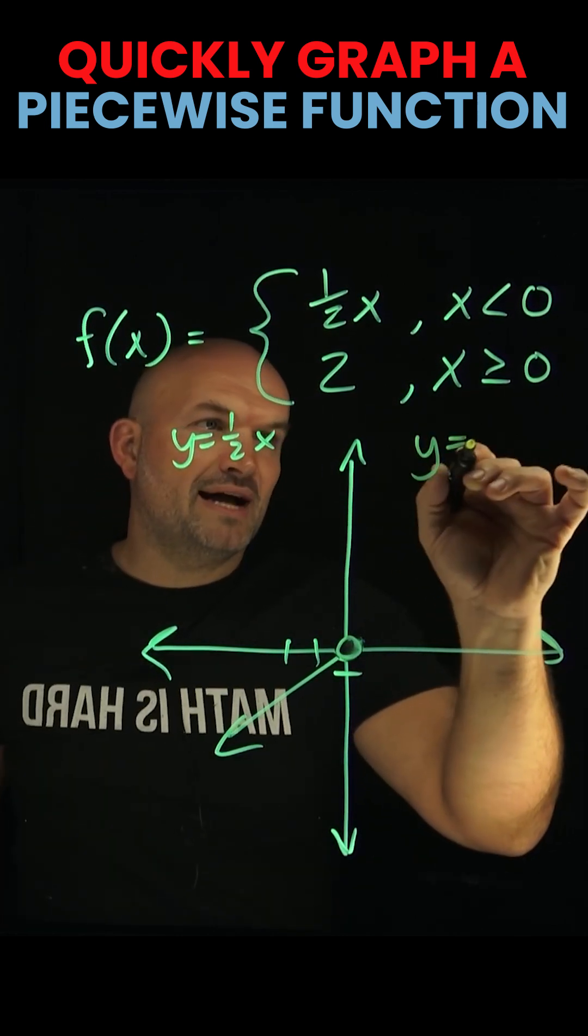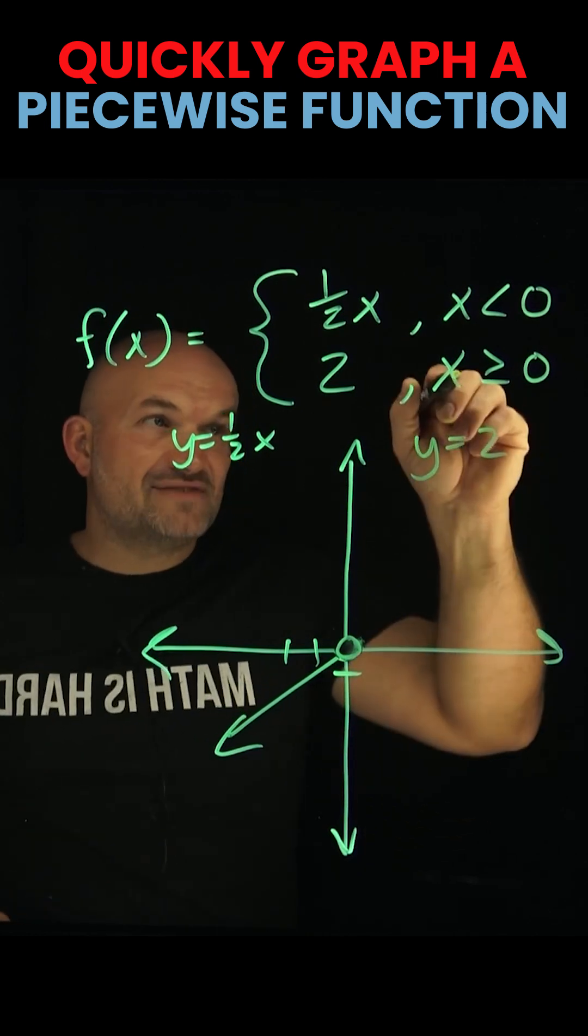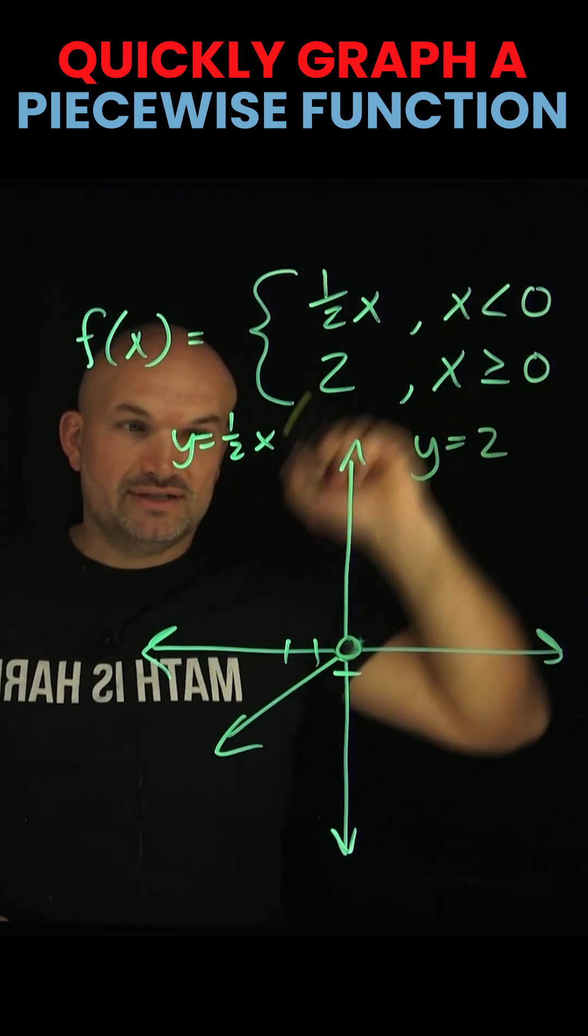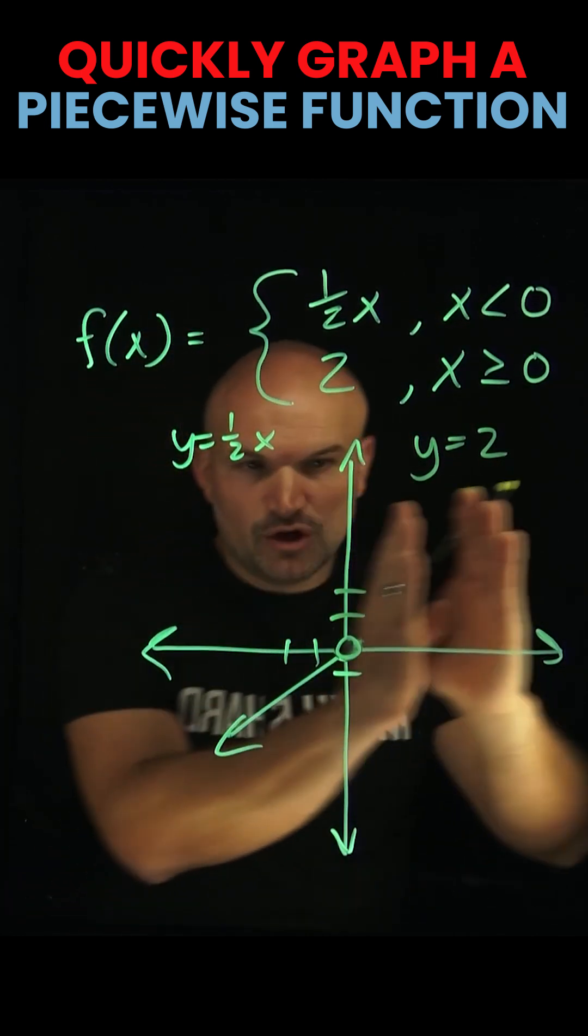Now I look at the next function, which is y = 2. That is true for x values that are greater than or equal to zero. So therefore, that's going to be values going to the right.